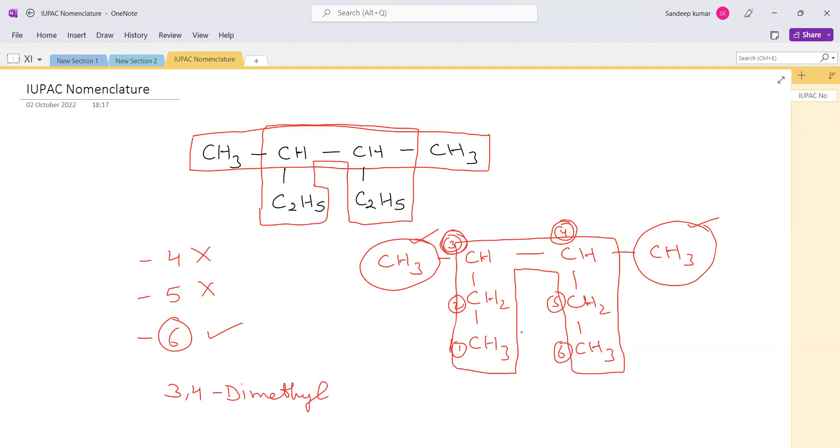we have to look for the word root, that is the parent chain. That parent chain is made up of how many carbon atoms? As the parent chain is made up of six carbon atoms, so we can write hex. And the carbon atoms are linked to each other with a single bond, then the primary suffix comes